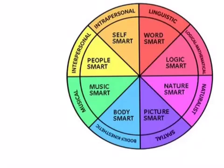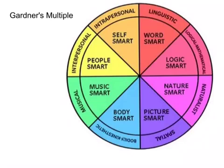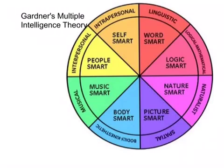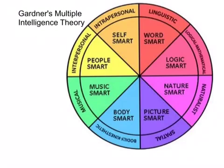The chart I have up here right now is known as Gardner's Multiple Intelligence Theory. Gardner's Multiple Intelligence Theory was created by this guy named Howard Gardner in the early 1990s. He's a Harvard professor.